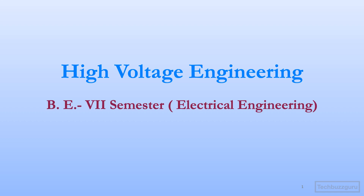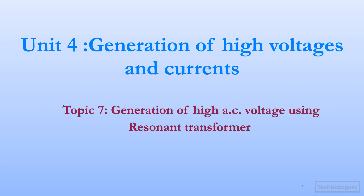Welcome to this video on high voltage engineering for seventh semester electrical engineering. We are going to continue with the fourth unit — generation of high voltages and currents — covering the seventh topic: generation of high AC voltages using a resonant transformer. This is the second method for generation of high AC voltages, following the cascade transformer method studied in the earlier video.